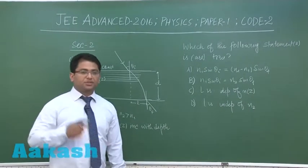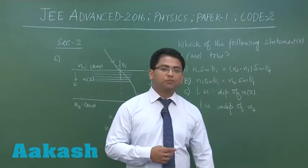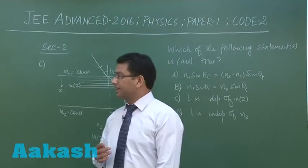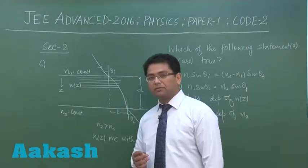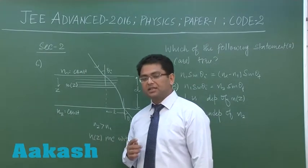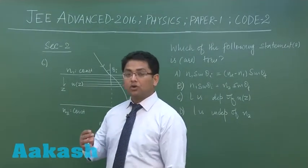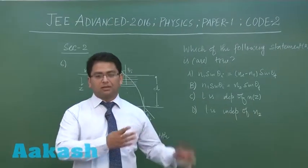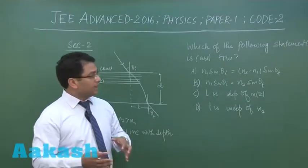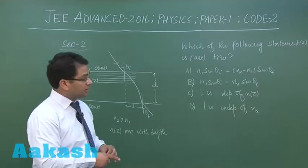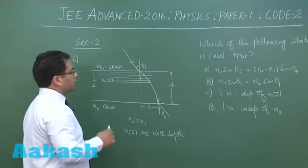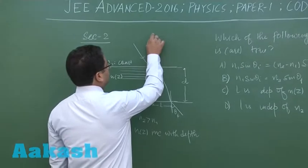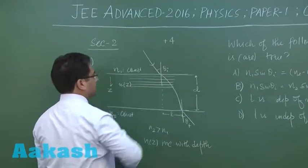All right, now let's proceed to Section 2 and let me just briefly explain what this section is all about. In this particular section, you may have one or more than one correct option, so generally we call this multiple options. The marking scheme is quite interesting: if all correct options are bubbled, you would be awarded plus four marks.